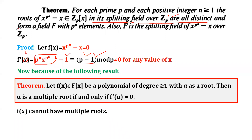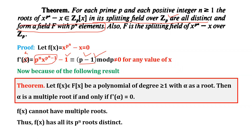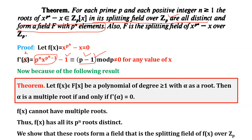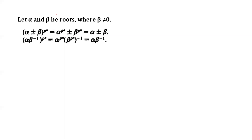Now we have to prove that the collection of roots forms a field with p^n elements. Since f(x) has all its p^n roots distinct, we show that these roots form a field, which is the splitting field of f(x) over Z_p. To prove the collection is a field, take two arbitrary elements alpha and beta from the collection, where beta is nonzero. We have to verify that alpha plus or minus beta and alpha times beta inverse are also in the collection.